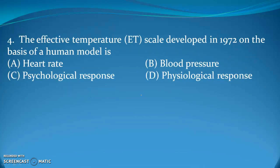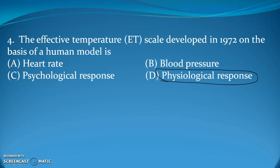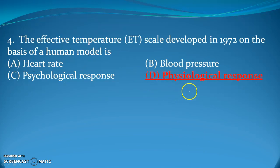Next question: the effective temperature scale (ET), developed in 1972, is based on which human model — heart rate, blood pressure, psychological response, or physiological response? Temperature is related to the physiology of the body; when temperature increases, we sweat, which is a physiological response. Heart rate, blood pressure, and psychological response are not related. So the answer is physiological response.